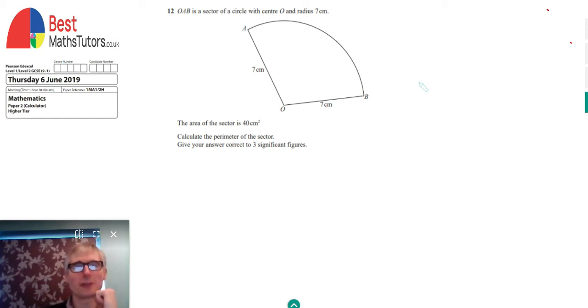Hello and thanks for watching Gary's Teachers Maths. I'm continuing to go through the Edexcel Higher Tier Paper 2 from 2019. This is question 12 and it's a question about areas and perimeters of sectors.